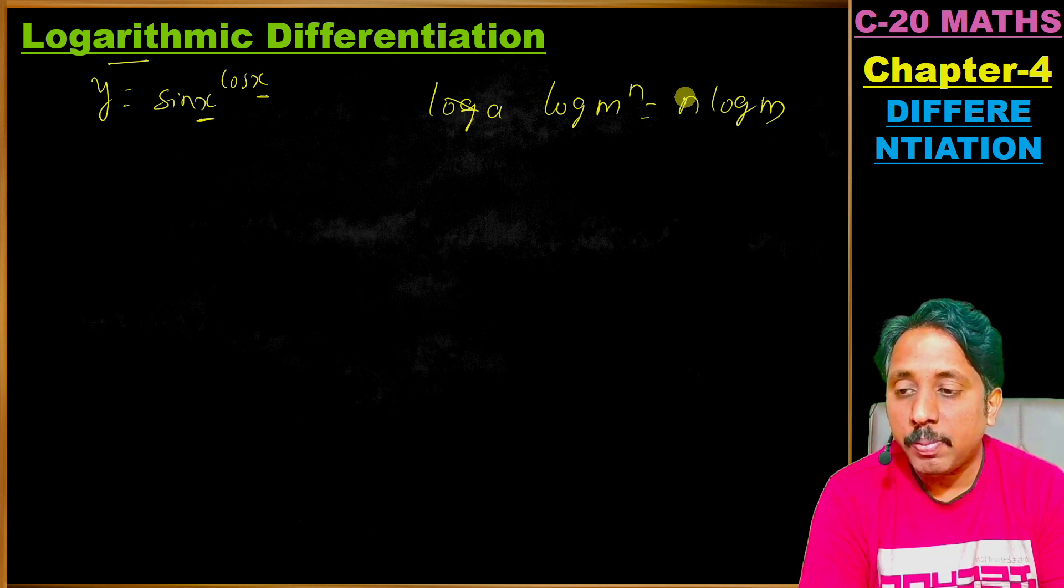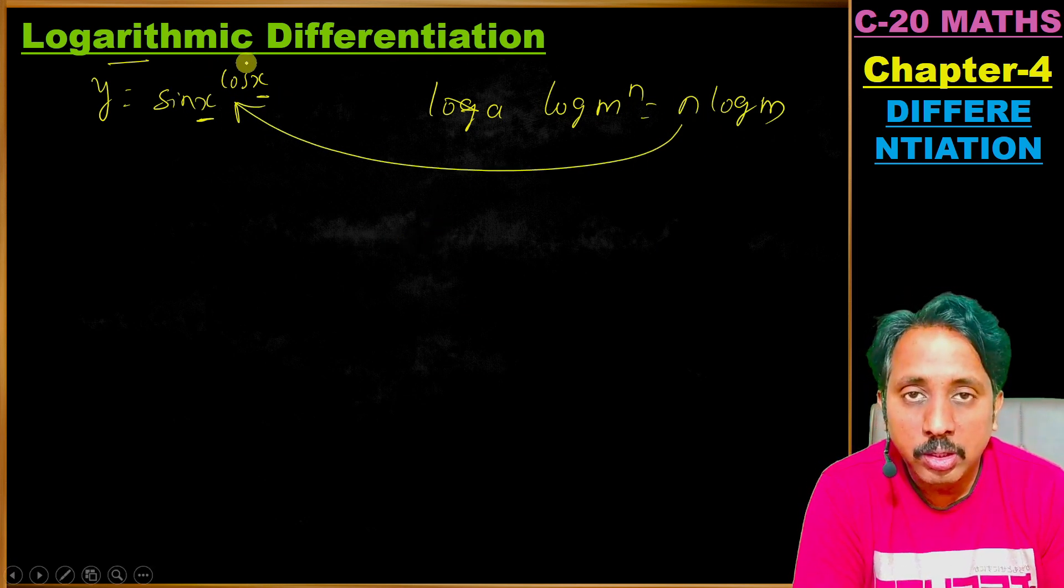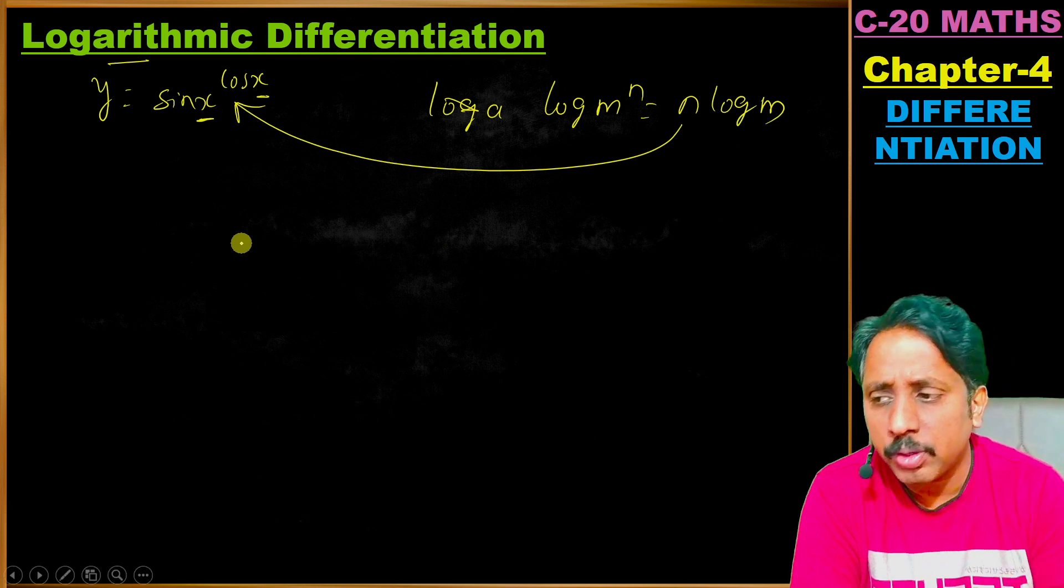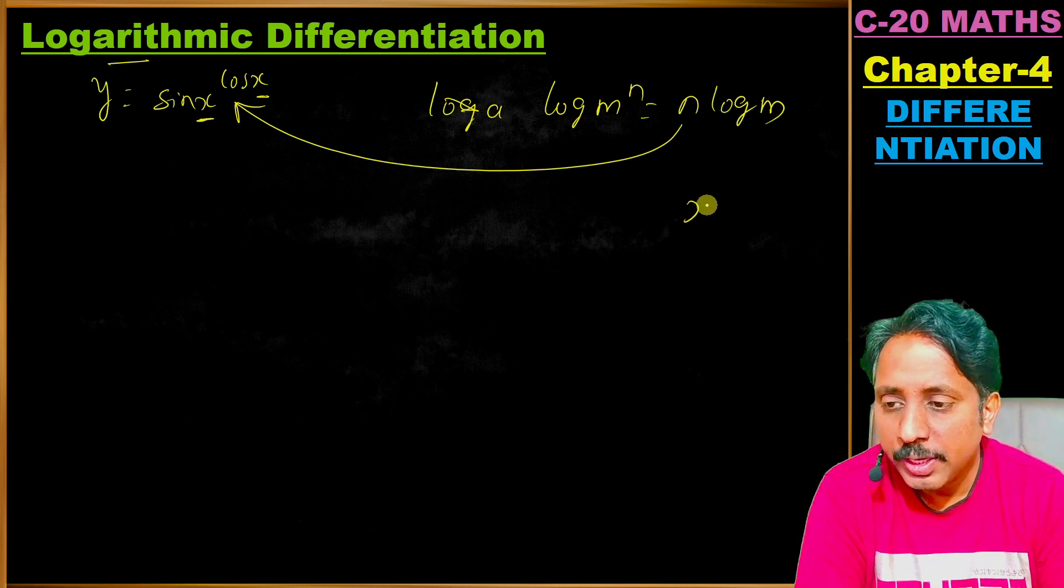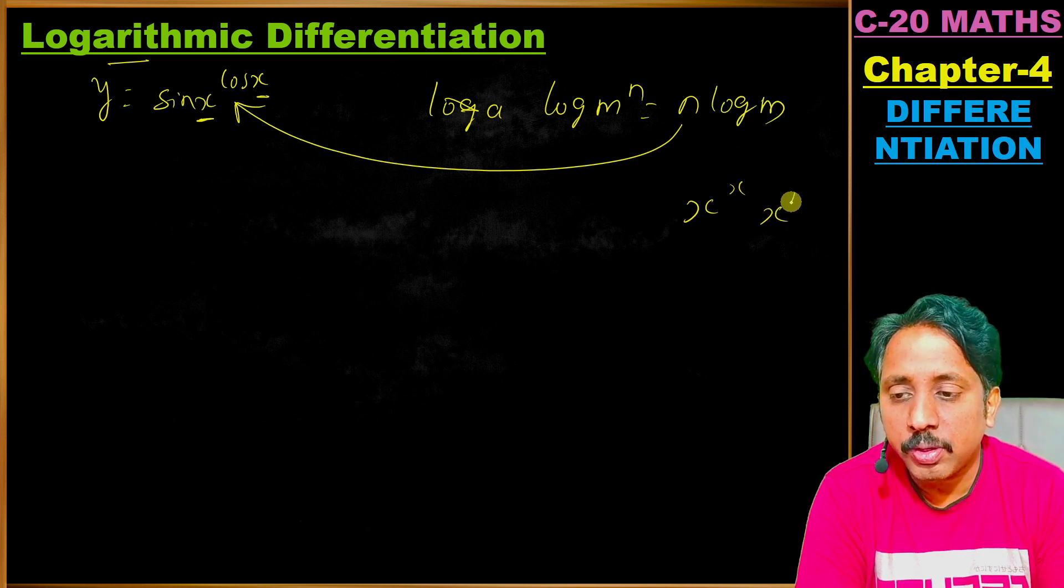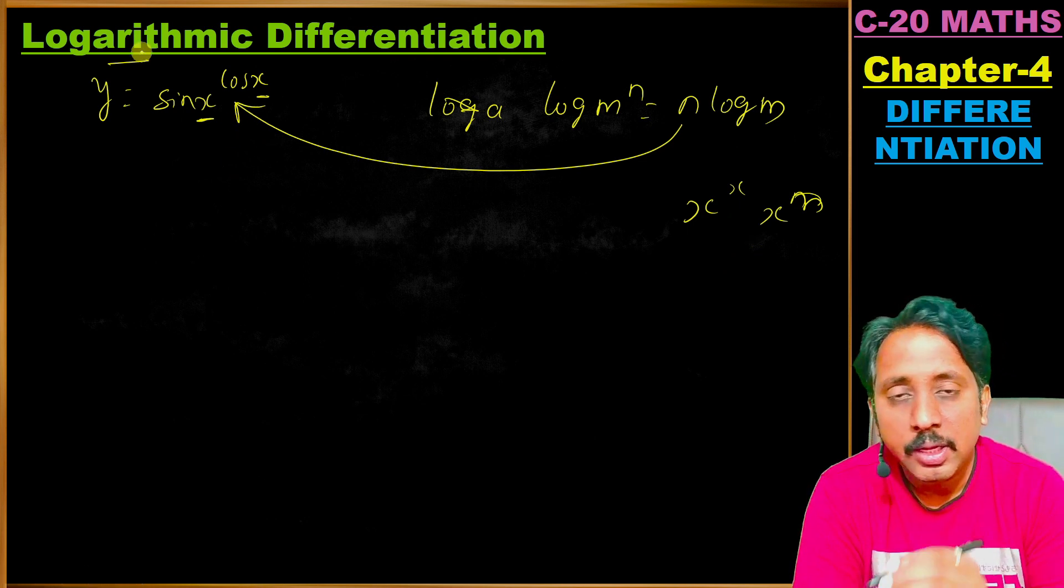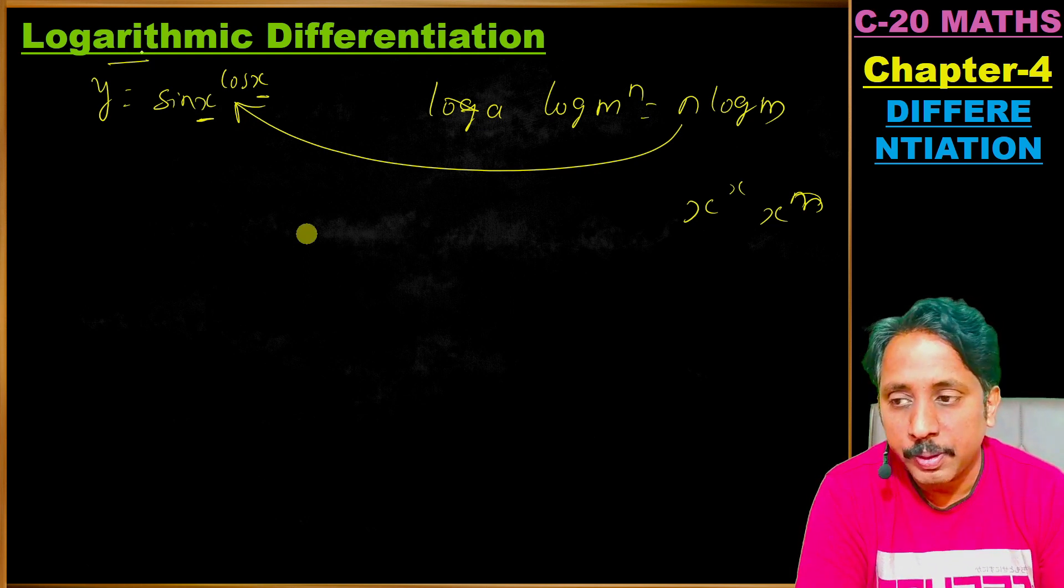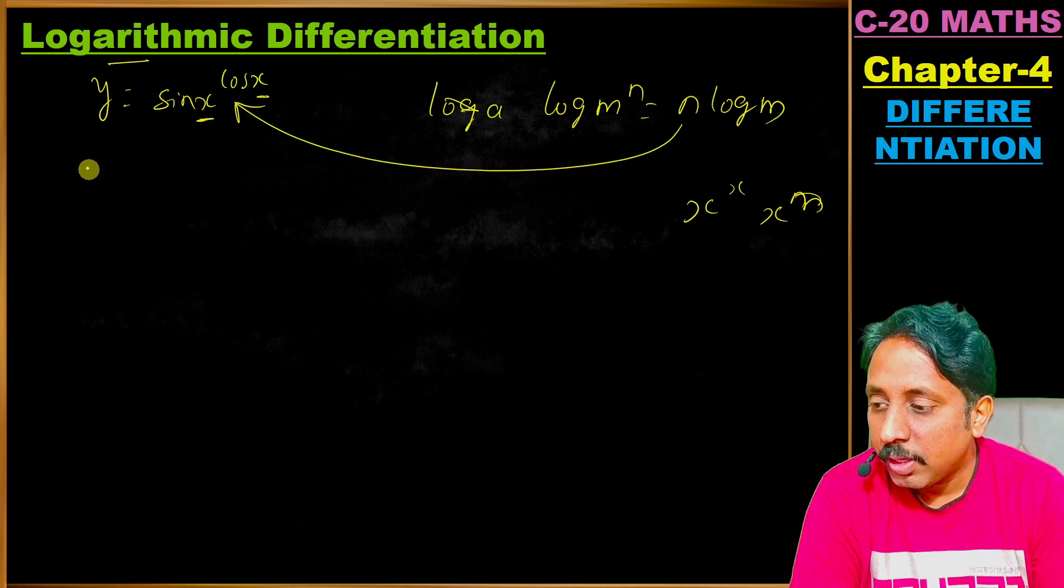We use the logarithmic property that log m to the power of n is equal to n log m. We can apply logarithmic differentiation when we have a function to the function power - for example, x to the power of x, or any function where the power is also a function.